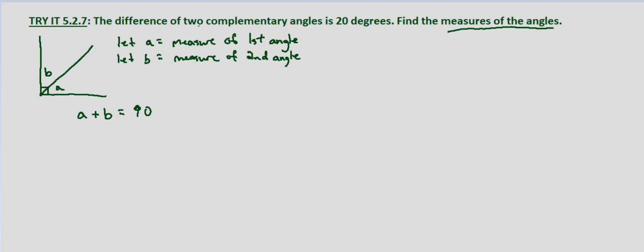And we also know the difference of the two complementary angles is 20 degrees. So we know that A minus B or B minus A, since where we assign them is arbitrary, is 20 degrees.